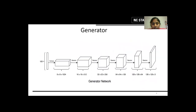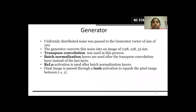Now we will look at the structure of the generator network we are using. On the left we can see a vector of size 100 of random noise inputs, which is being converted to an image of 128x128. The generator uses uniformly distributed noise, and also uses transpose convolution and batch normalization techniques. After each batch normalization, we use a ReLU activation function. The final image is passed through a tanh activation to squash the pixel range between minus 1 and 1, basically normalizing the pixel range of the images.